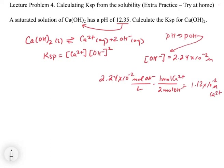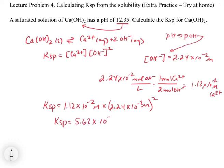Now we can plug into our Ksp expression. We can say that Ksp is equal to 1.12 times 10 to the minus 2 molar times 2.24 times 10 to the minus 2 molar squared. We can get a value of Ksp in this case of 5.62 times 10 to the minus 6.